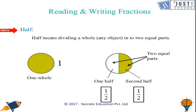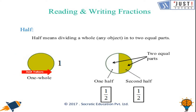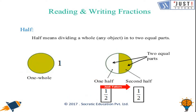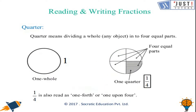Here we are learning about half. Half means dividing a whole object into two equal parts. For example, half of a chocolate means if you have a complete chocolate and divide it. Here there is a pizza — when you divide this pizza into two equal parts, that is half. This is the first half and there is the second half.